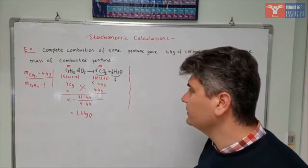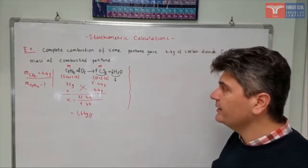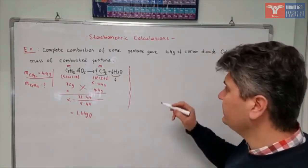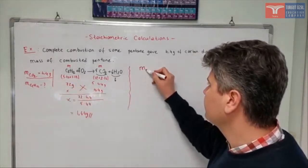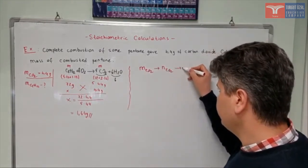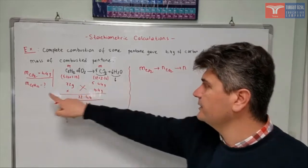There is a second method for a solution of this. In this second method, you can use the formulas. What you can do is that from the given mass of carbon dioxide, you can find the mole number of carbon dioxide. Then you can find the mole number of the required compound, C5H12.